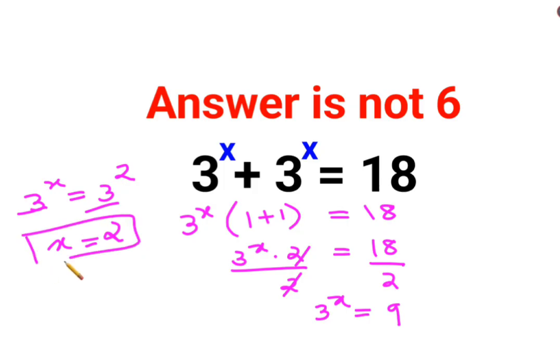Okay, let's put it back in the question. So we have 3 square plus 3 square. That is basically 9 plus 9. Answer comes out to be 18 which is your RHS.